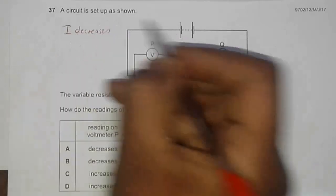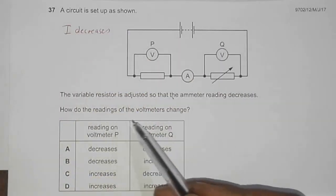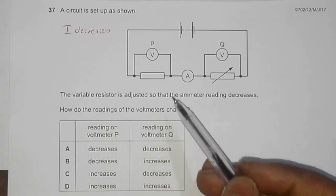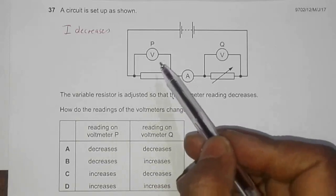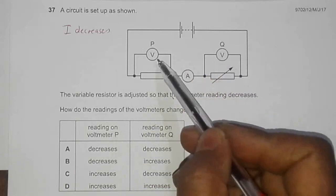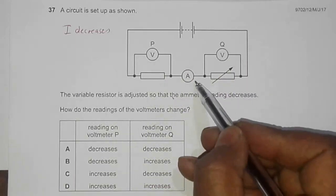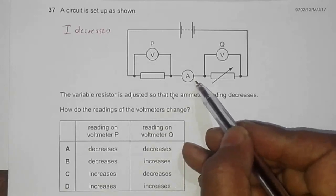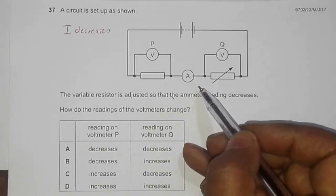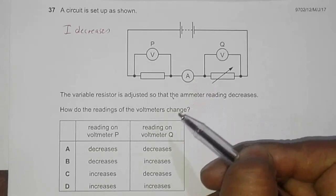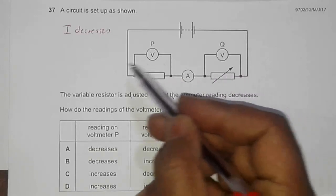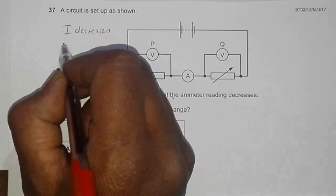How do the readings of the voltmeters change? We have to find the change in the readings of voltmeters P as well as Q. Since I decreases, what we must have done is increased the overall resistance of the circuit.